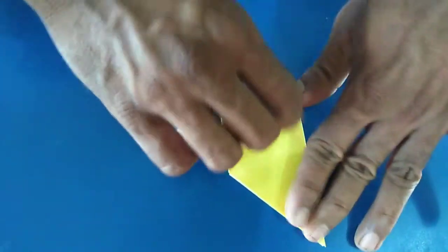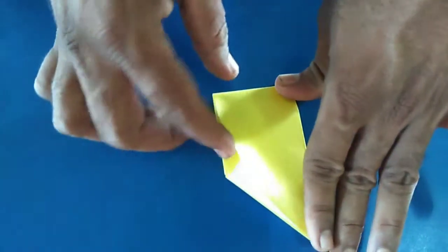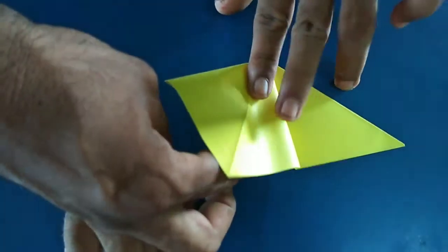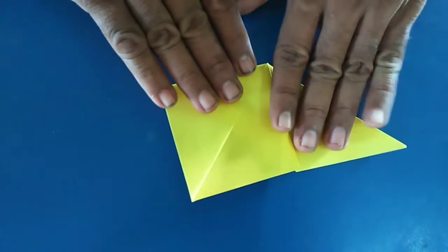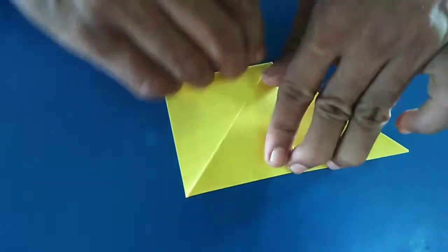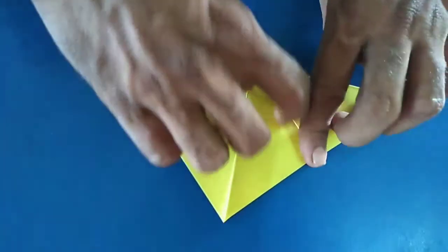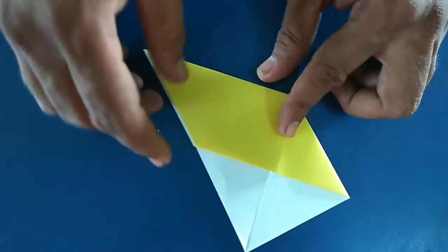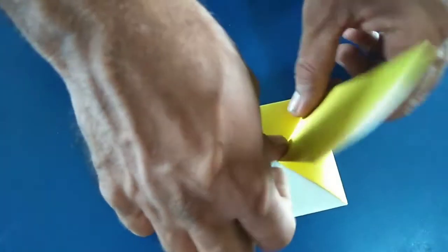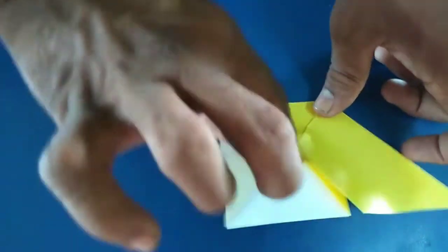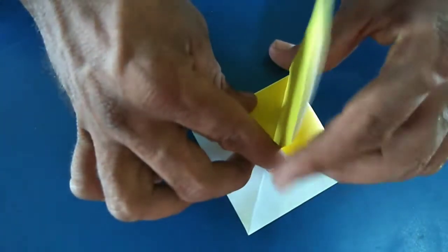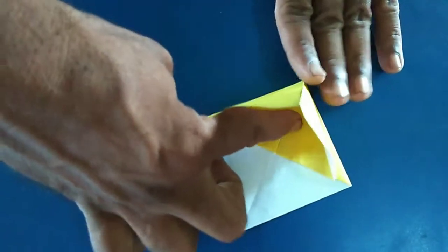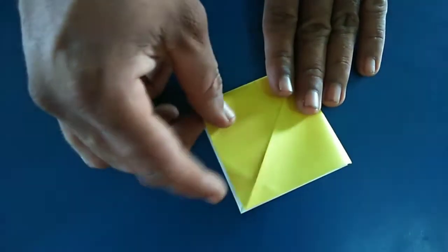Fold it like this way. Take this line and put it down. Fold it down. This side also you have to take and open this pleat and press it.